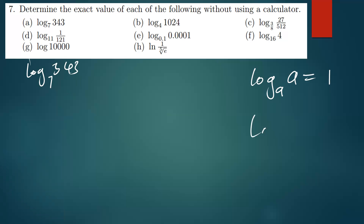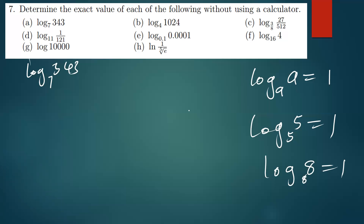For example, log 5 base 5 is 1, log 8 base 8 is 1. This is why we say the log of 10 is 1 — because if no base is written, the base is 10. So log 10 base 10 equals 1.